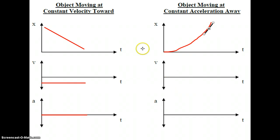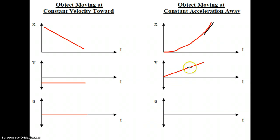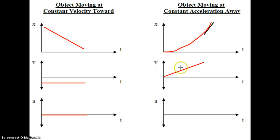For the object moving at constant acceleration away, on the VT graph we have a straight line with a positive slope, indicating the velocity is increasing at a constant rate — therefore constant acceleration. It's above the T-axis, indicating the object is moving away from the point of origin. We do have a non-zero A value; because the slope of the VT line is positive, that would be positive acceleration — a horizontal line above the T-axis.